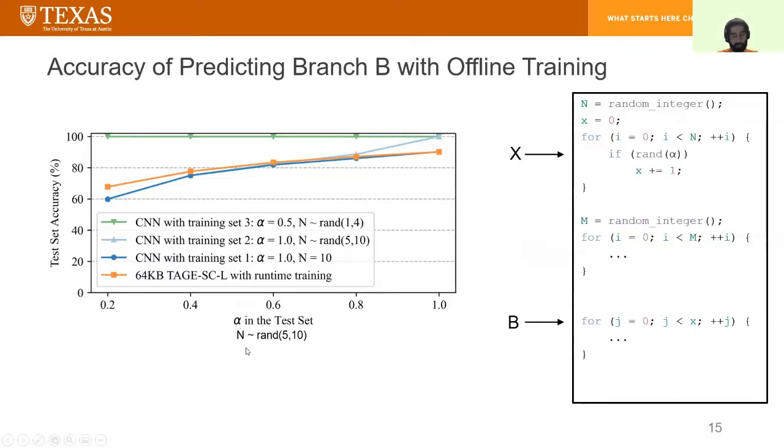And we're interested in evaluating the accuracy of branch B in certain conditions. In evaluation, I'm going to sample N from a range between 5 and 10, and I'm going to evaluate the accuracy on five different values for alpha.